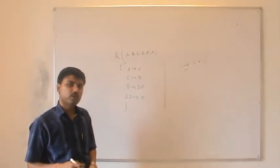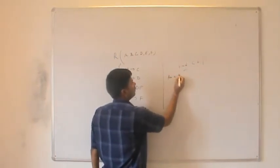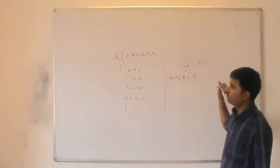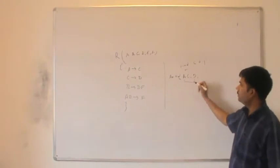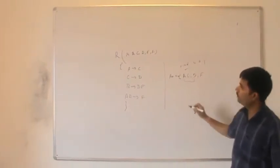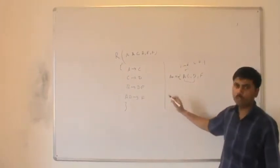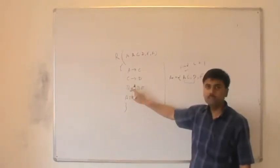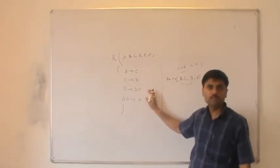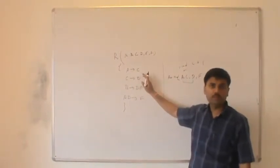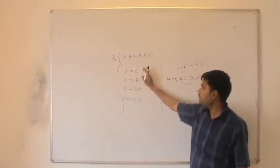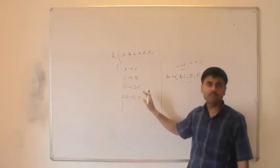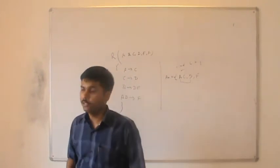We follow the same pattern: compute closures. Taking A+, we get A, C, D. From AD we can reach F. But B is completely unreachable — B does not appear on the right-hand side of any dependency. This tells us that B must be present in every candidate key.